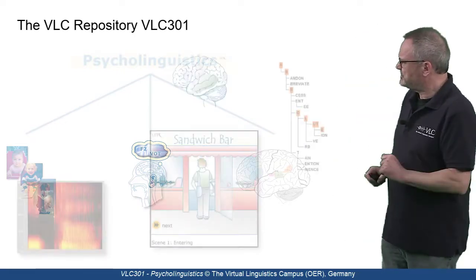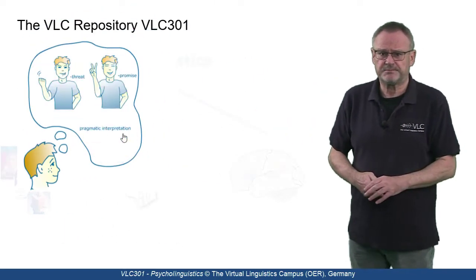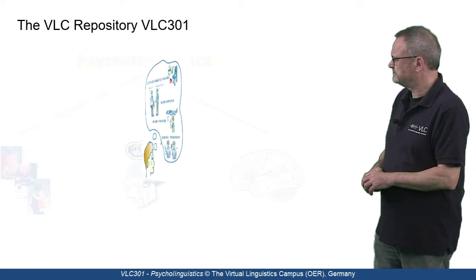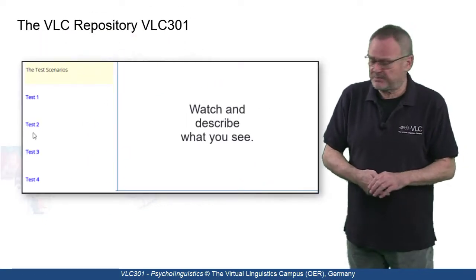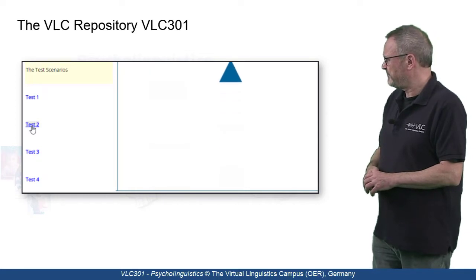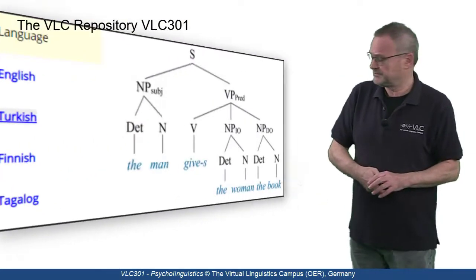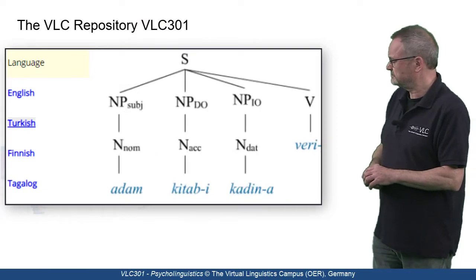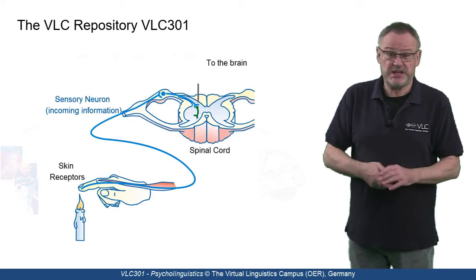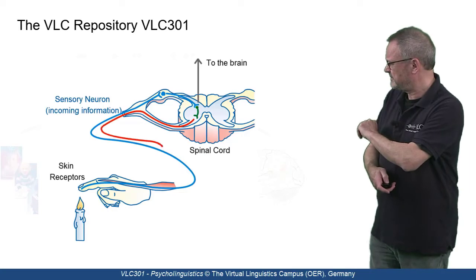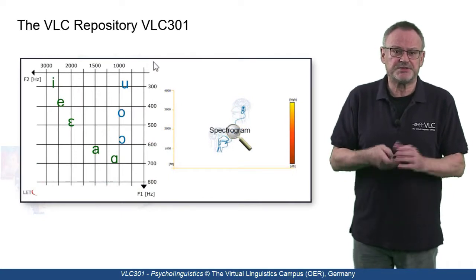Here are some examples. We use interactive images wherever possible. We try to visualize psycholinguistic experiments. We have integrated sound samples wherever suitable. We use sound and visual illustrations in many ways. And the highlight are our interactive sound charts with spectrographic information.